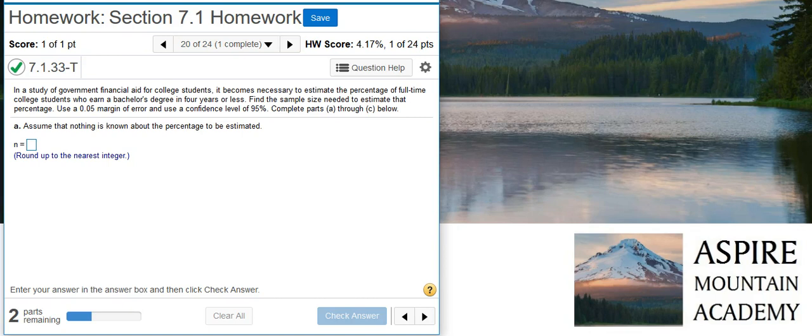In a study of government financial aid for college students, it becomes necessary to estimate the percentage of full-time college students who earn a bachelor's degree in four years or less. Find the sample size needed to estimate that percentage. Use a 0.05 margin of error and use a confidence level of 95 percent. Complete parts A through C below.